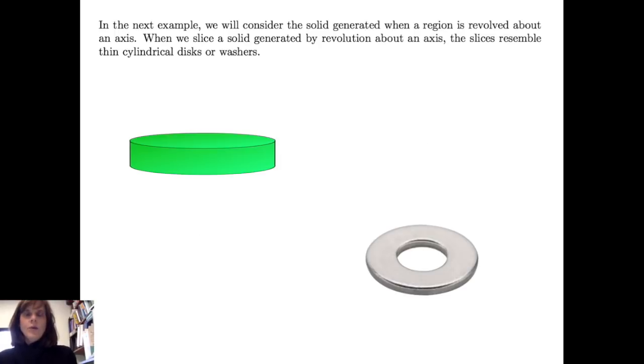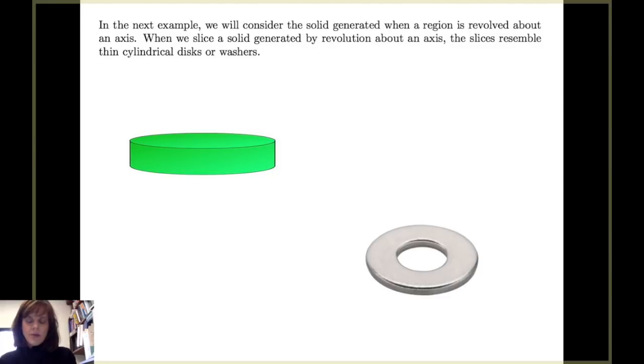In our next example, we'll consider a solid generated when a region is revolved about an axis. When we slice a solid generated by a revolution about an axis, the slices resemble thin cylindrical disks or washers. And let's consider how that comes about.